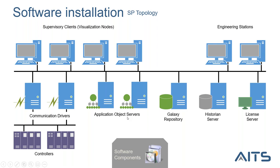Regarding the application object server, for non-telemetry server cases, we recommend installing the communication driver and application object server on the same PC so the object reads locally and communicates locally with its driver before reaching the controller. In this topology there are two different networks: the application network and the field network, and with redundancy you can have an internal application object server network — three networks total. I'll show how to configure this in the demo.